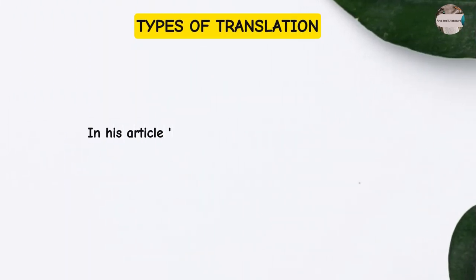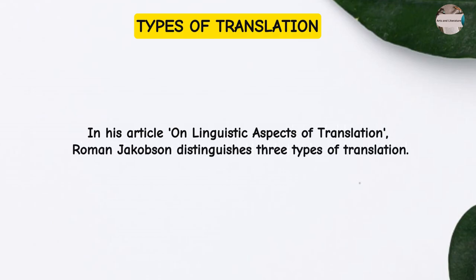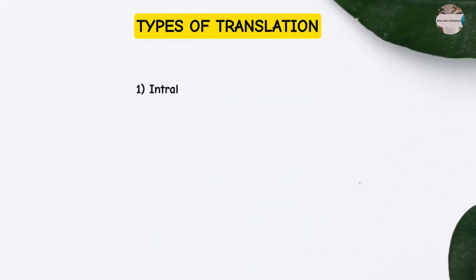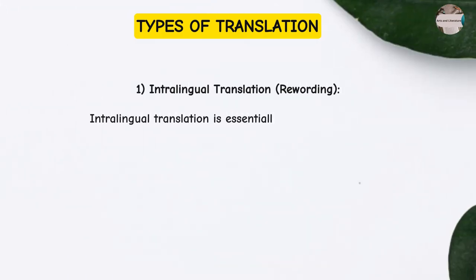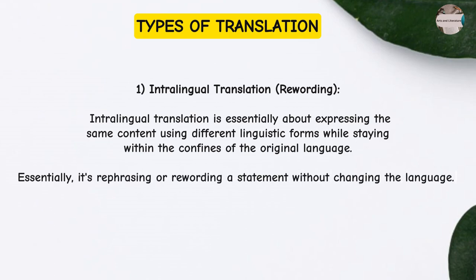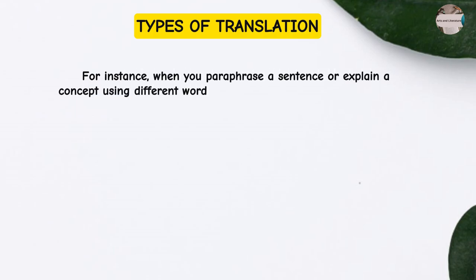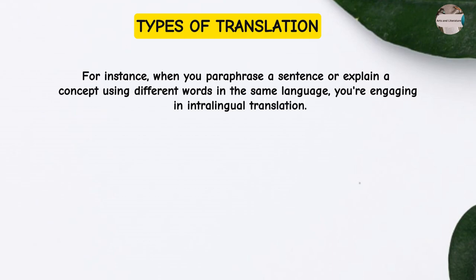In his article on linguistic aspects of translation, Roman Jakobson distinguishes three types of translation. The first is intralingual translation, or rewording. Intralingual translation is essentially about expressing the same content using different linguistic forms while staying within the confines of the original language — rephrasing or rewording a statement without changing the language. For instance, when you paraphrase a sentence or explain a concept using different words in the same language, you're engaging in intralingual translation.